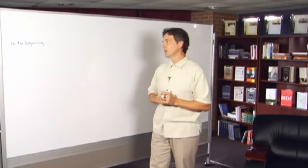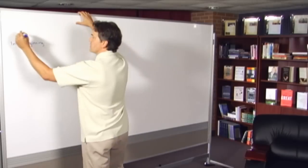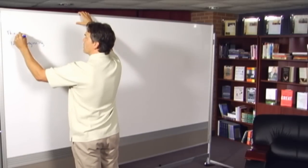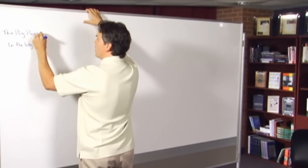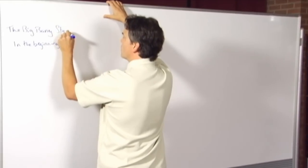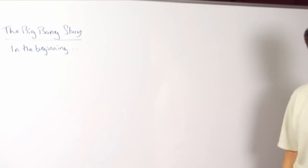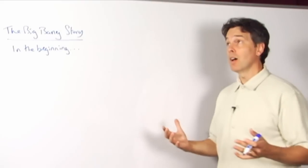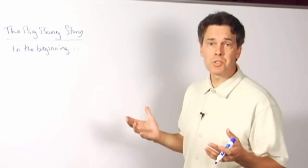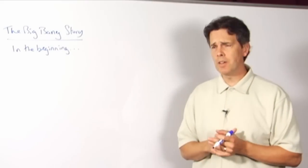First of the stories I want to tell that has an answer to this question is the story that we're familiar with, at least in outline terms. I'm just going to call it the Big Bang story. And the story goes something like this. In the beginning, everything that exists in the universe was not all spread out in space the way it currently is.